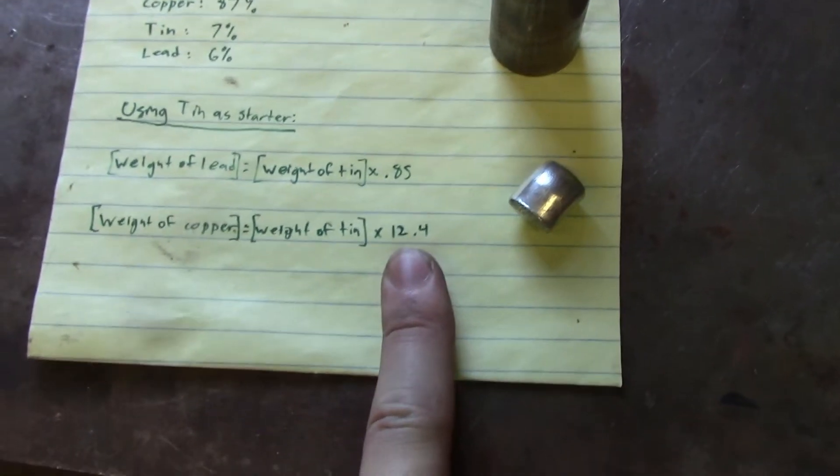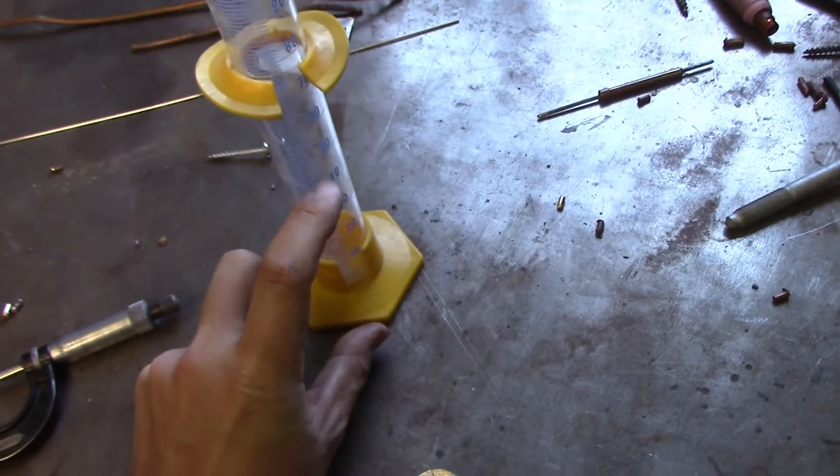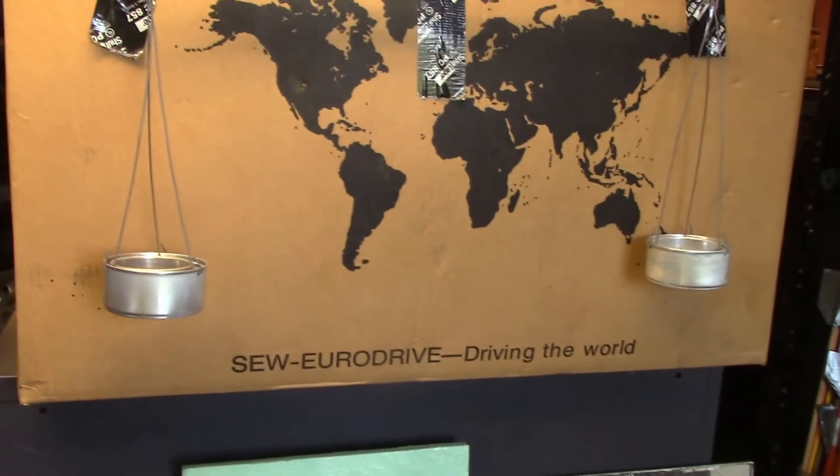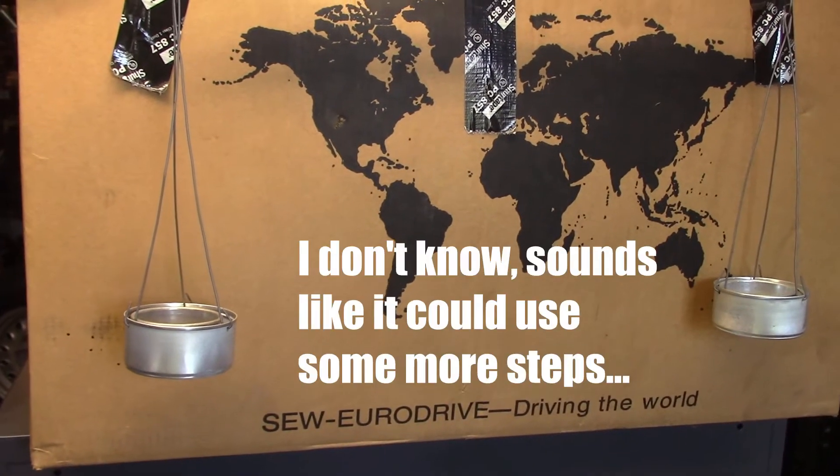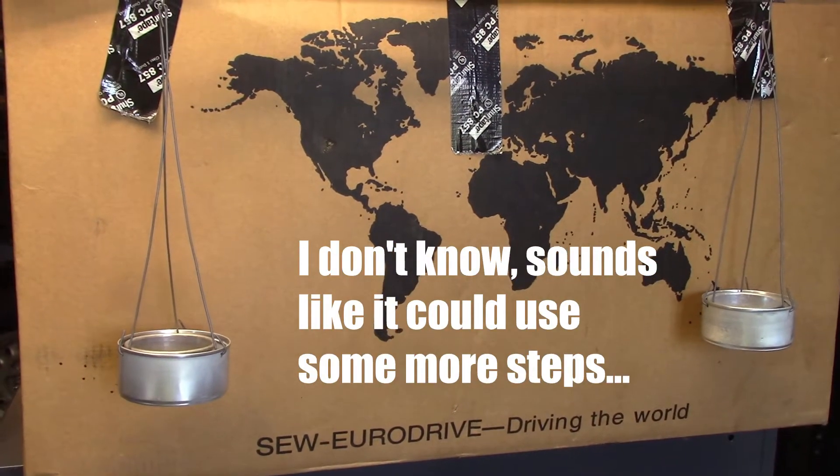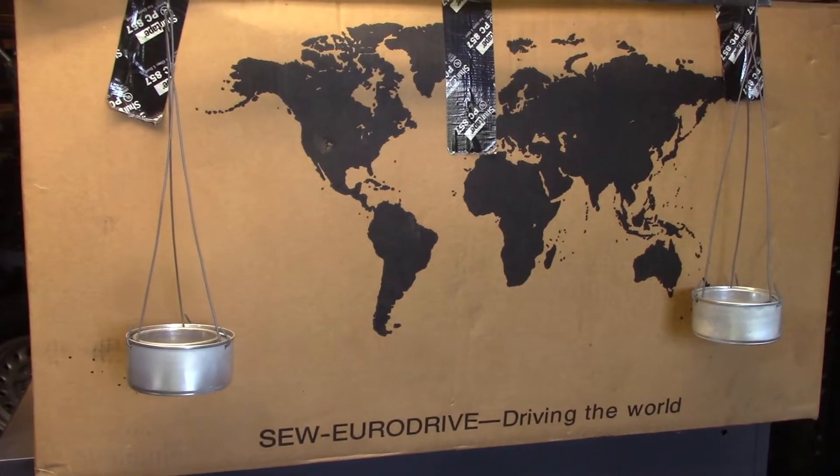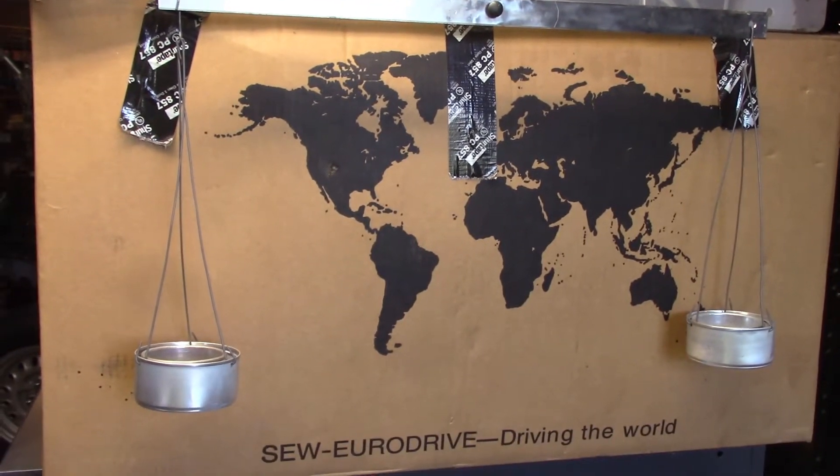Then I will measure the volume of that sand and then multiply it by 0.85 for the lead and 12.4 for the copper to come up with the scaled volume of sand that I then stick back in the scale and add metal until I get the proper weight. So a little more complex than just weighing an amount on a scale but using what I have.